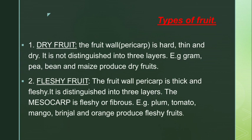The second type is fleshy fruit. The fruit wall or pericarp is thick and fleshy, and is divided into three layers: epicarp, mesocarp and endocarp. The mesocarp is fleshy or fibrous, just like mango, which is a very fibrous fruit. Examples of fleshy fruits are plum, tomato, mango, brinjal and orange.